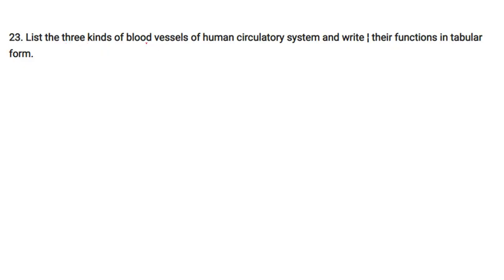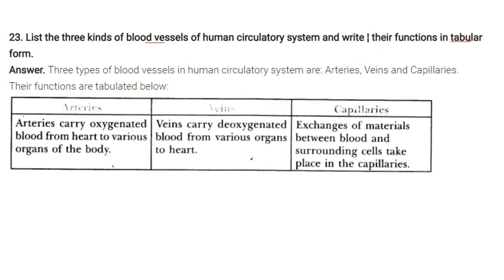List the three kinds of blood vessels of the human circulatory system and write their functions. Arteries carry oxygenated blood from the heart to various organs. Veins carry deoxygenated blood from various organs to the heart. Capillaries are responsible for exchanging material between the blood and the surrounding cells.